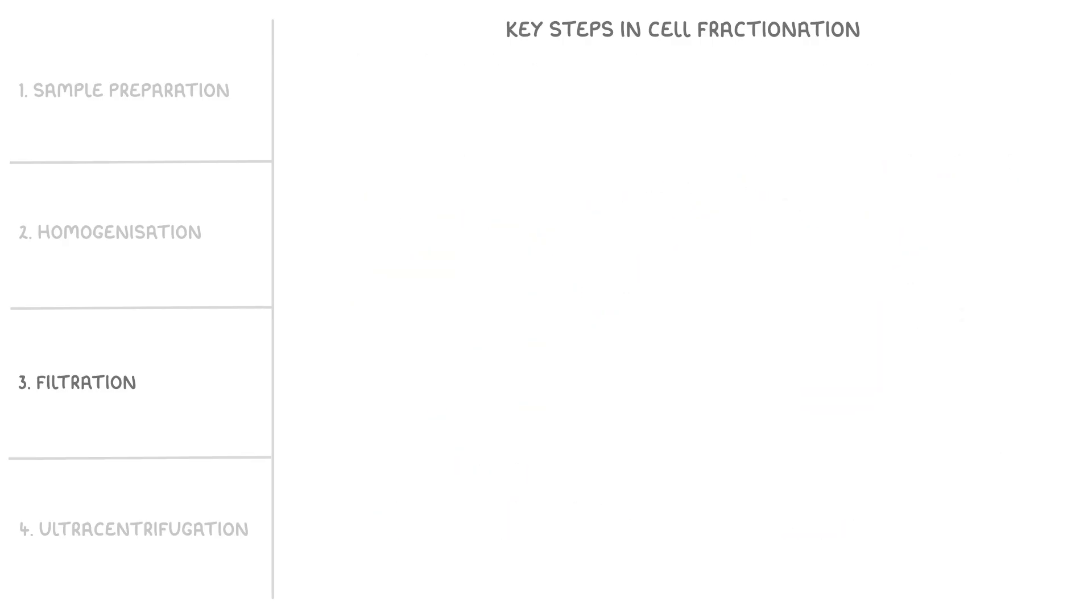The final step is ultracentrifugation which is when we separate the organelles based on their density using a machine called a centrifuge that spins the filtrate at various speeds.